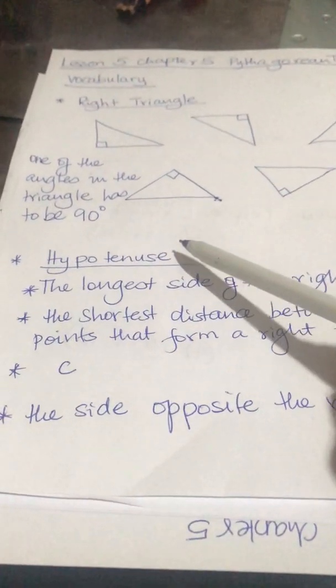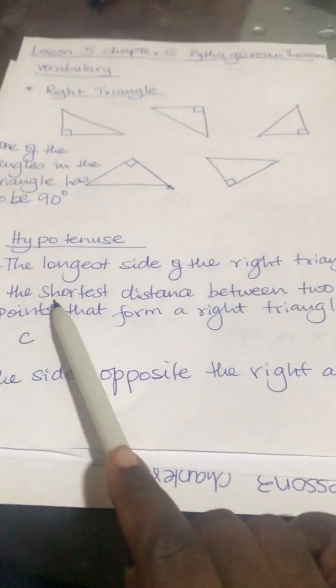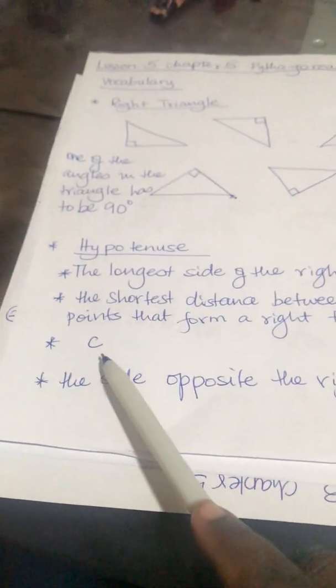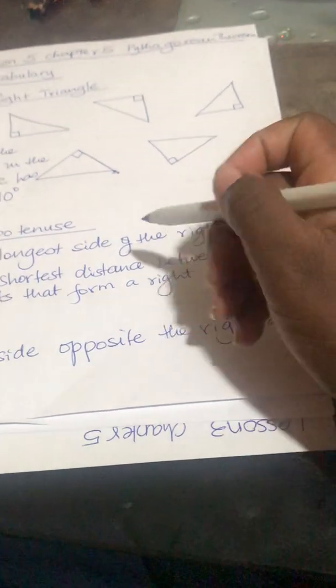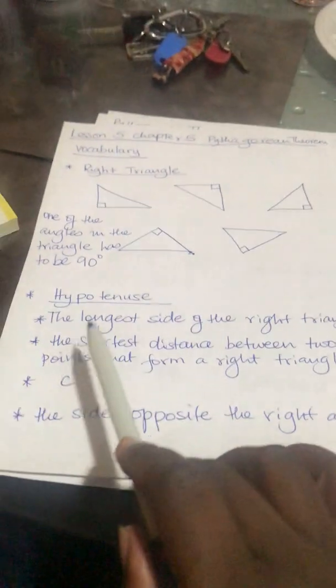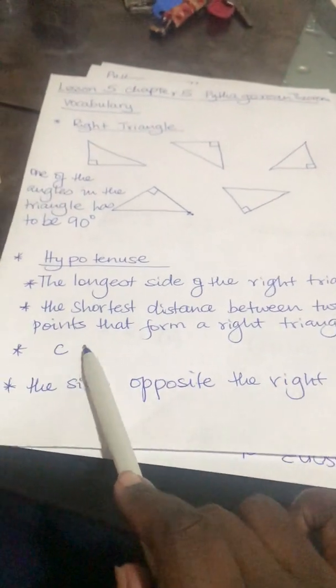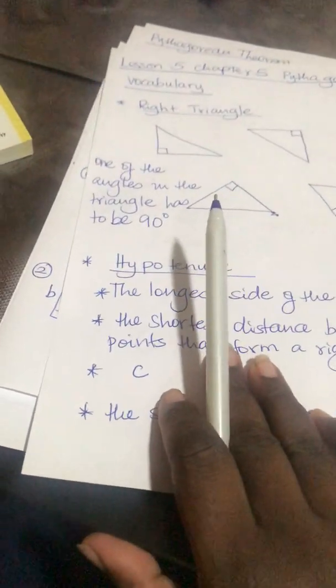You need to know the names. One of the names is hypotenuse. What is the hypotenuse? It's the longest side of the right triangle. It is the shortest distance between two points that form a right triangle. So it is the side opposite the right angle — the longest side of the right triangle.